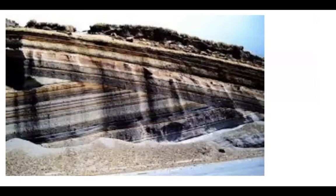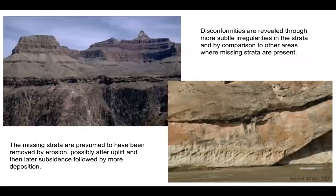Here's another good example of tilting. Other kinds of unconformities are harder to recognize. Disconformities are revealed by more subtle irregularities. Basically, something happened and the strata was either missing or deformed — the missing strata was removed by erosion. The layers came up, eroded off, then subsided, and more deposition took place on top.